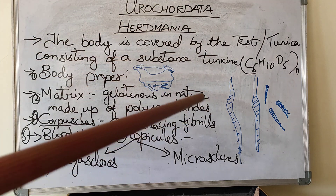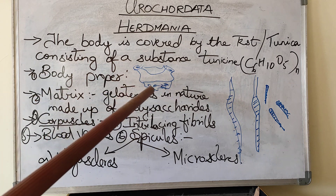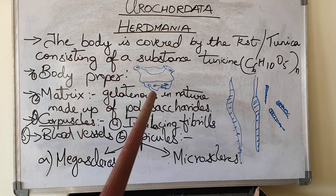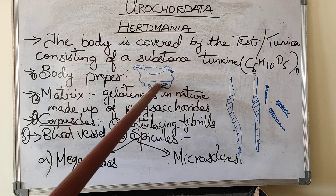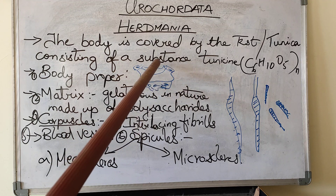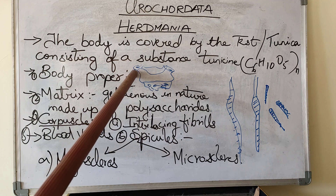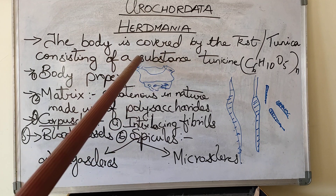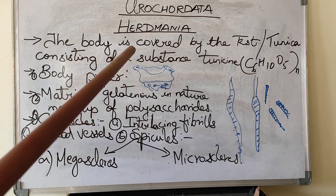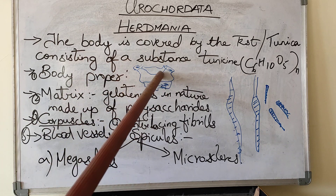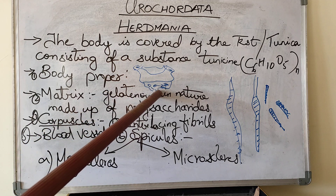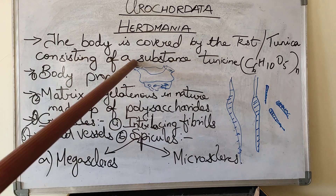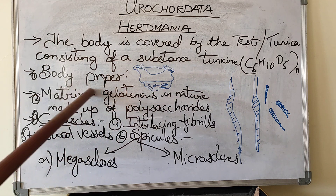Coming to the division of the body, the first part is the body proper. If you see the diagram of Herdmania which I previously explained, I have drawn a small diagram here. The anterior part is where you will have the siphons — this is the branchial and atrial siphons. The body proper's anterior part is divided into two parts: the broader part called the anterior part and the foot part. The cylindrical projections, the siphons, are all included in the body proper.